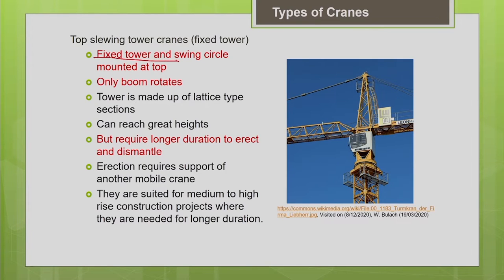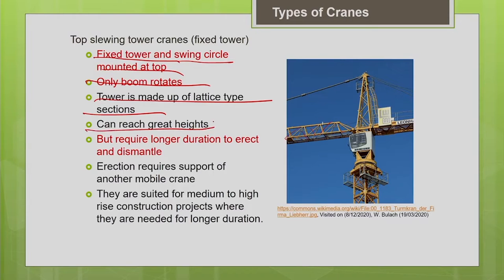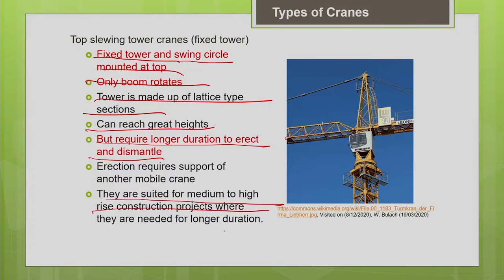Top slewing tower cranes have a fixed tower with a swing circle mounted at the top. The tower is made up of lattice-type sections that can reach great heights. These cranes are generally used for greater heights but require longer time for mobilization, erection, and dismantling, and need the support of another mobile crane for erection. They are suited for medium to high-rise construction projects where the crane is needed for a longer duration.